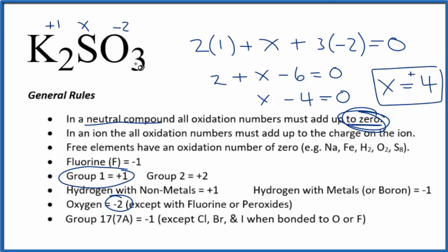So the oxidation state on the sulfur in K2SO3 is going to be a positive four. If we add all of these up, three times minus two is minus six, plus four is minus two, plus two times one, that does give us zero.